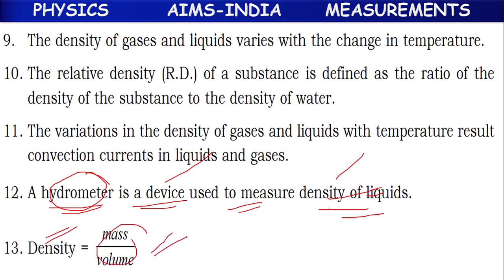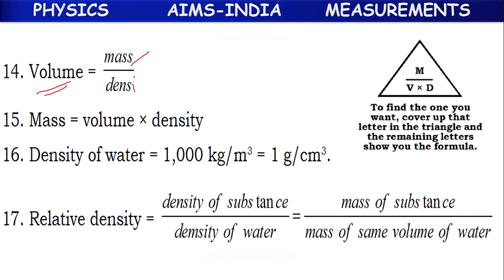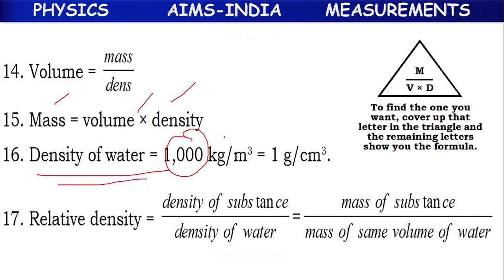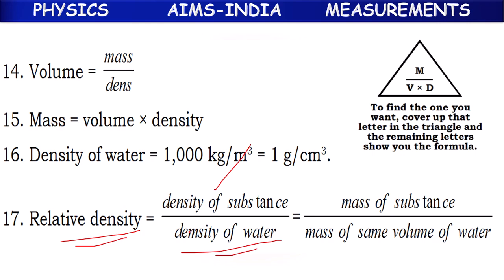Density formula: density = mass / volume. Volume formula: volume = mass / density. If you want to find mass: mass = volume × density. From this triangle, we can find all values. Relative density means density of substance by density of water, or mass of substance by mass of the same volume of water. If the volume is the same, comparing the masses also gives relative density.